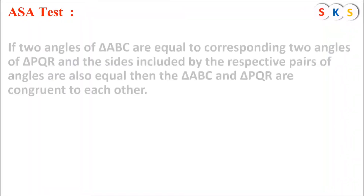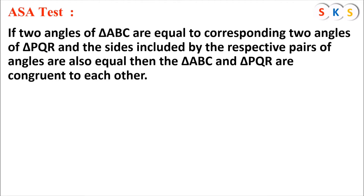ASA test — that is, Angle-Side-Angle test. If two angles of triangle ABC are equal to the corresponding two angles of triangle PQR, and the sides included by the respective pairs of angles are also equal, then triangle ABC and triangle PQR are congruent to each other. Let us understand the ASA test with the help of an example.